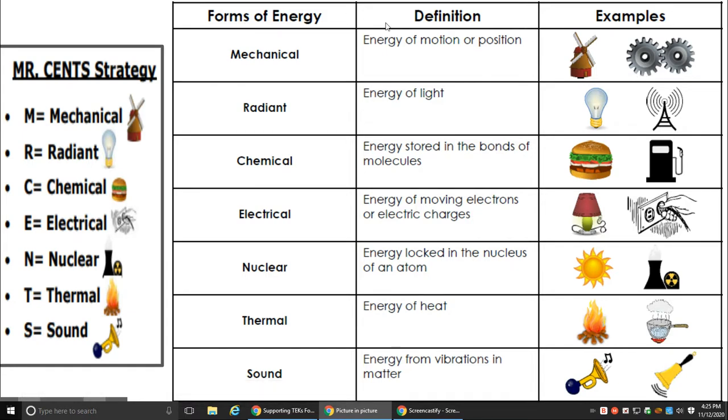So let's look at forms of energy, their definition and examples. Mechanical: mechanical energy is energy of motion or position. So anything that's moving or has gears would be mechanical. Radiant: energy of light. Chemical: energy stored in the bonds of molecules. You find that in food, gas, coal, wood, any natural resource.